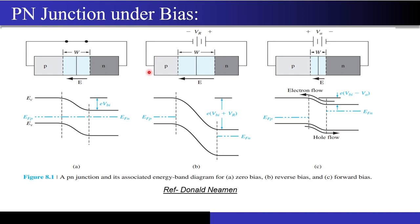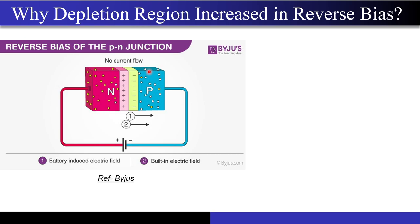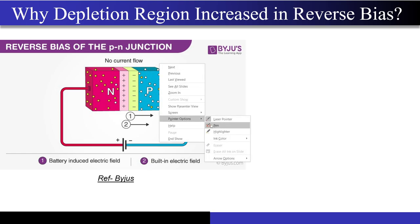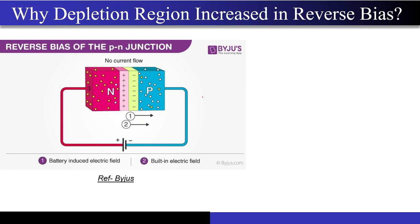We'll start with a few conceptual questions for interaction before moving on to problem solving. The first question is: can anyone tell me why the depletion region actually increases in the reverse bias case?